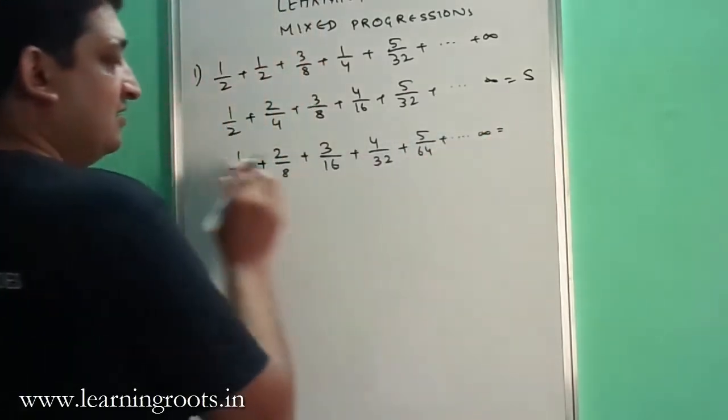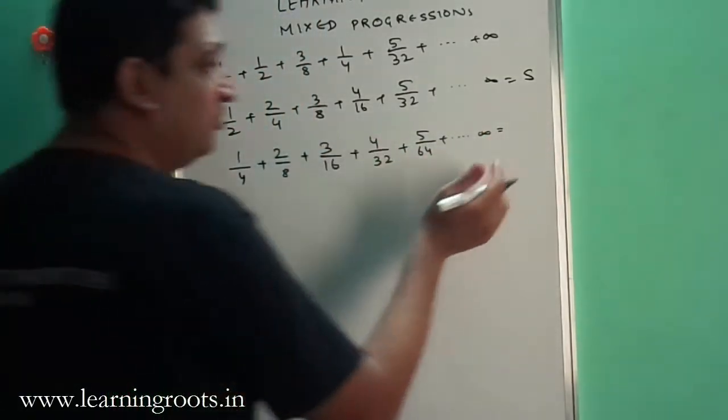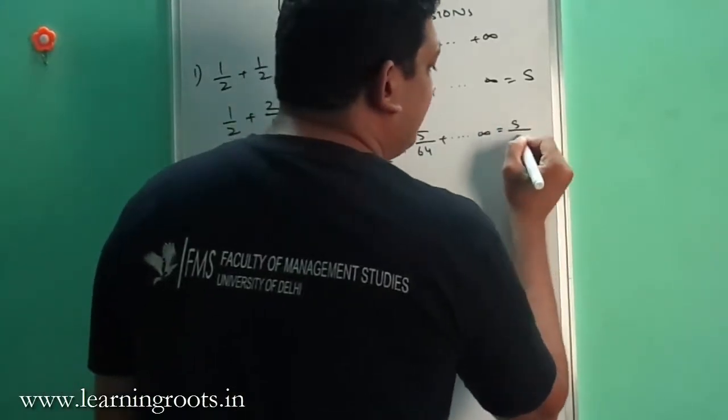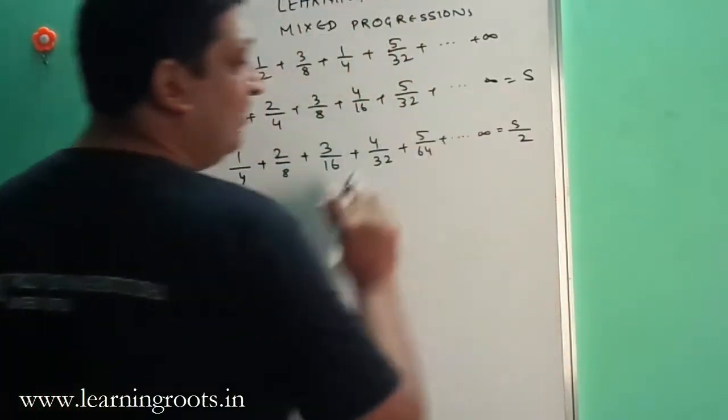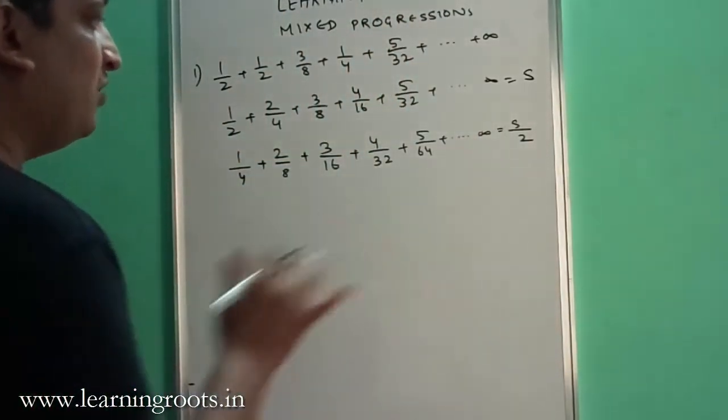Because we are multiplying the LHS by 1/2, the RHS will also get multiplied by 1/2 — or divided by 2, whichever way you want to see it.